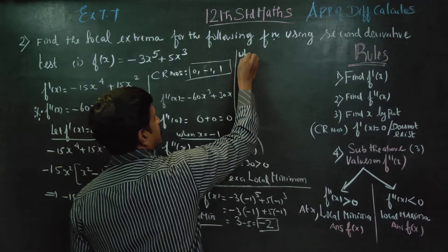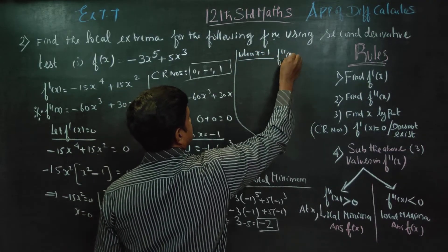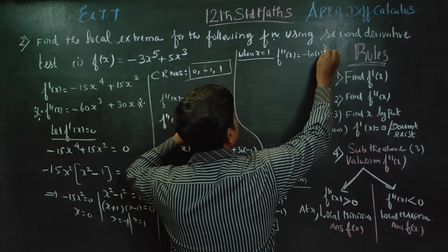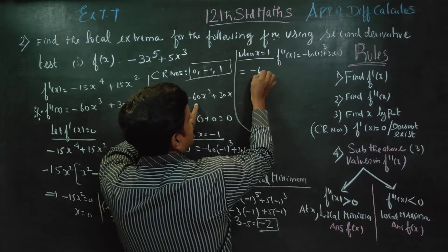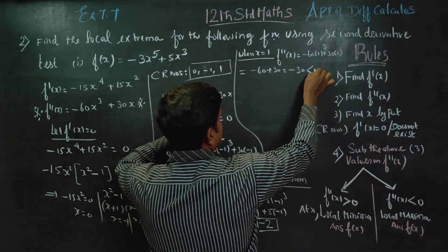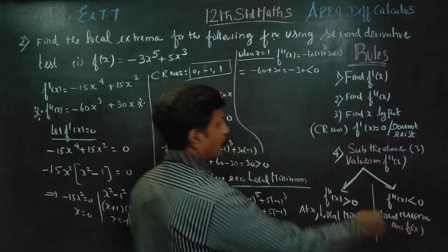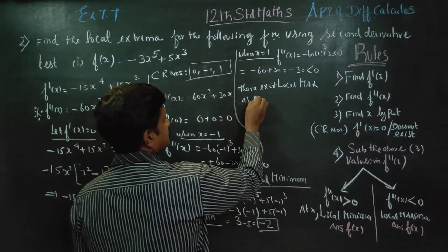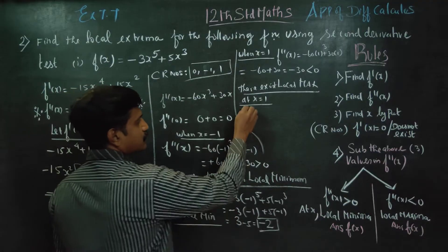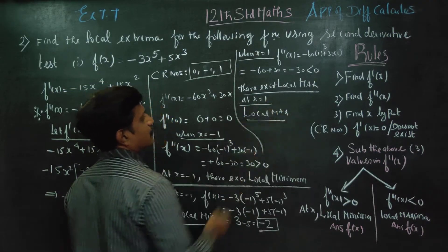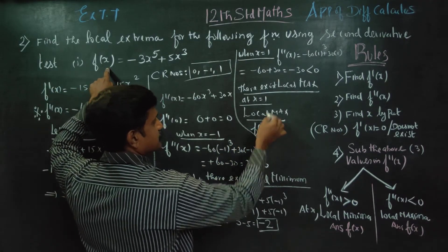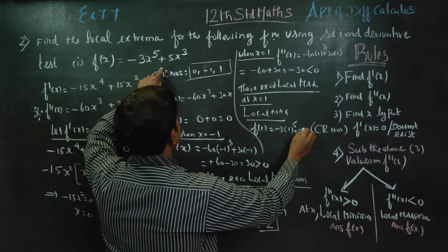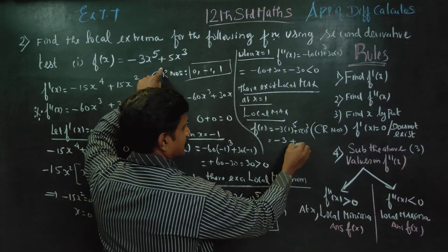Now for x = 1: f''(1) = -60(1)³ + 30(1) = -60 + 30 = -30. Since -30 is less than zero, at x = 1 there exists a local maximum. The local maximum value is f(1) = -3(1)⁵ + 5(1)³ = -3 + 5 = 2. So the local maximum value is 2. The maximum is the bigger number and the minimum is the smaller number.